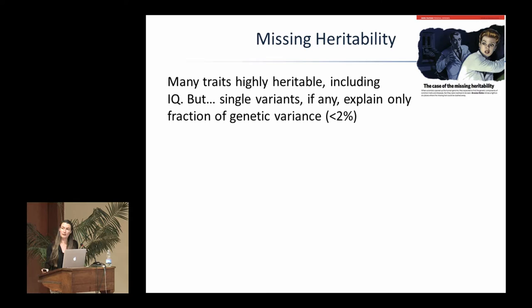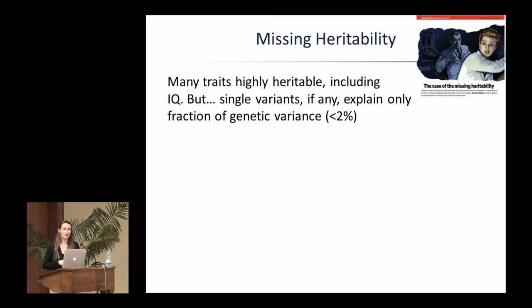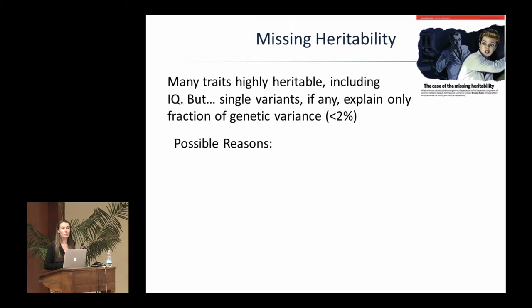This is an observation we see in many GWAS studies. Even for very highly heritable traits like height — heritability of 80% — the associated SNPs together explain less than 2% of the variance. This is the case of the missing heritability. Possible reasons include common versus rare variants: in a GWAS we only test common genetic variants, but rare variants might have a large effect on IQ. Also, the SNP-based heritability was nearly as high as twin-based heritability, which doesn't really leave much room for rare variants.